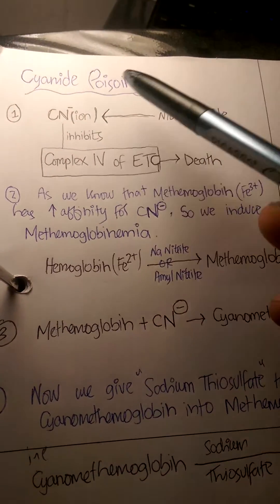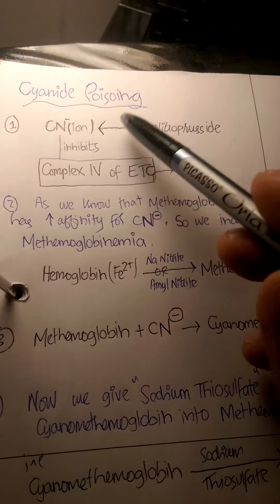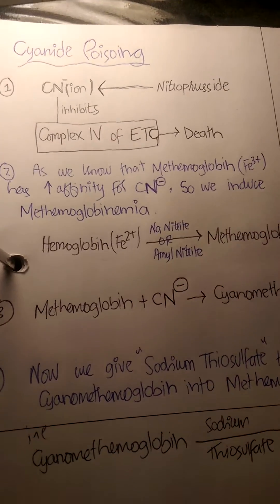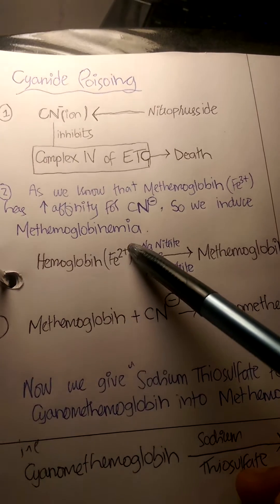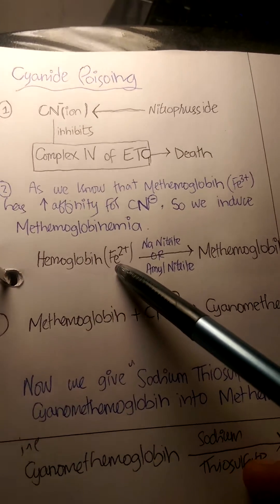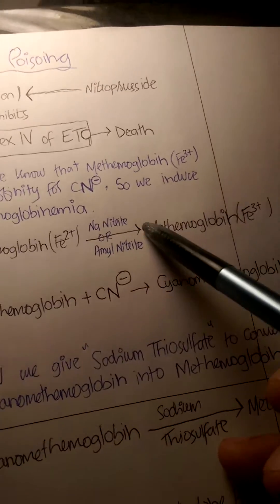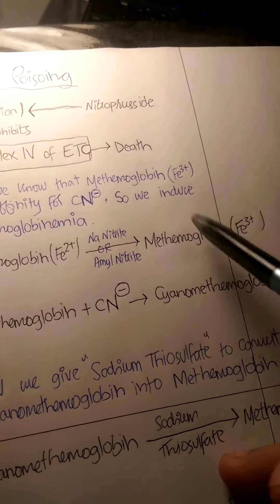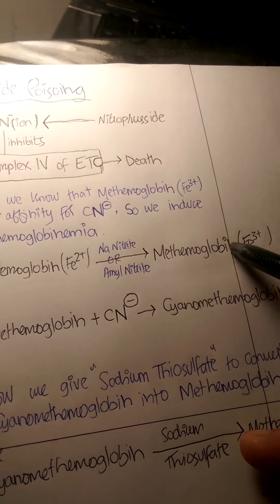Now we know the mechanism of injury caused by cyanide poisoning. Normally, the hemoglobin we have is in the reduced state, with iron in the ferrous form (Fe2+). But in methemoglobinemia, a condition separate from cyanide poisoning, the iron in hemoglobin is in the Fe3+ or ferric state—that is, oxidized.